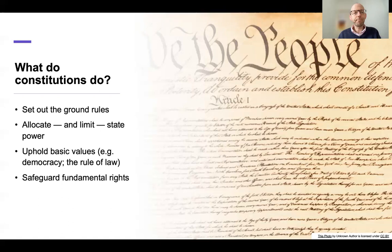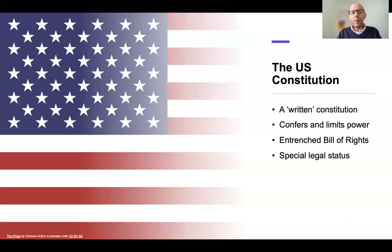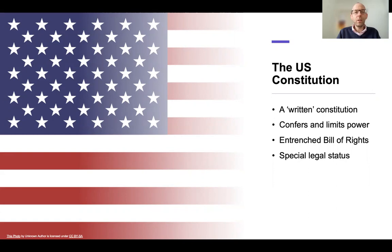When we look at a country like the US, we find a constitution that does these things. First and foremost, we have a text — a written constitutional document that sets out the ground rules, creates the institutions of government, confers power on them, and limits their powers. The US constitution also affords protection to fundamental rights, because contained within it is a bill of rights that sets out the basic rights of individuals and prevents the state, including lawmakers, from interfering with those rights. If that happens, the matter can be taken to court, and ultimately laws can be struck down if they breach fundamental rights.